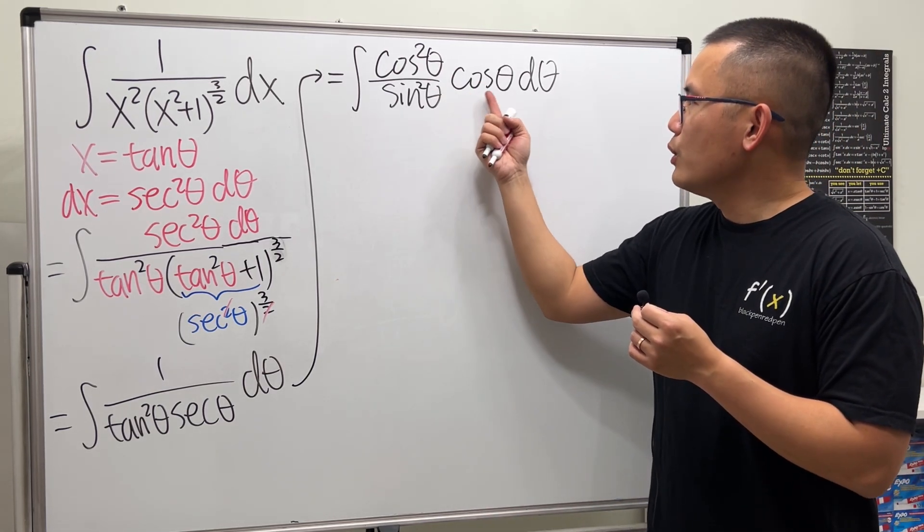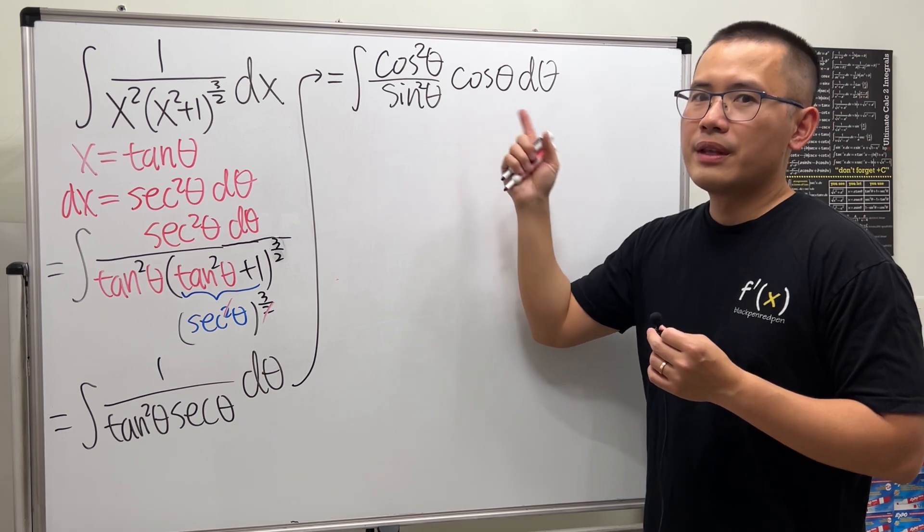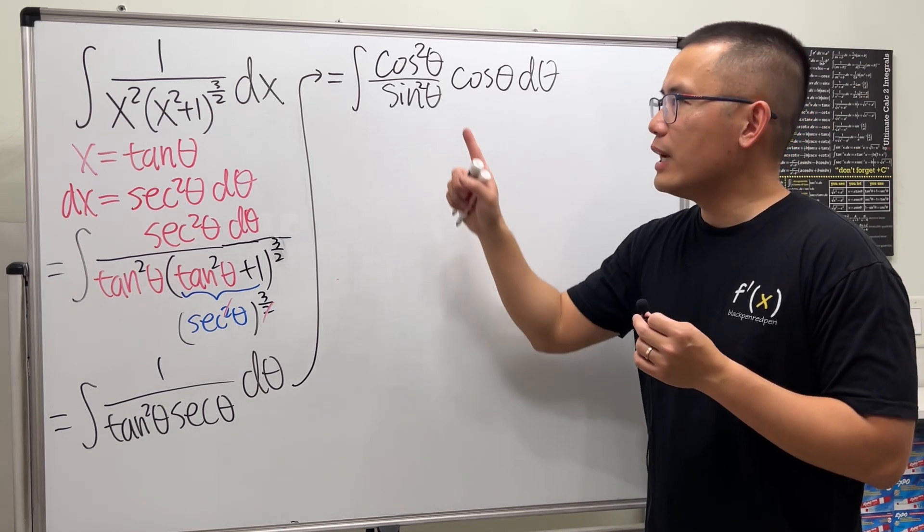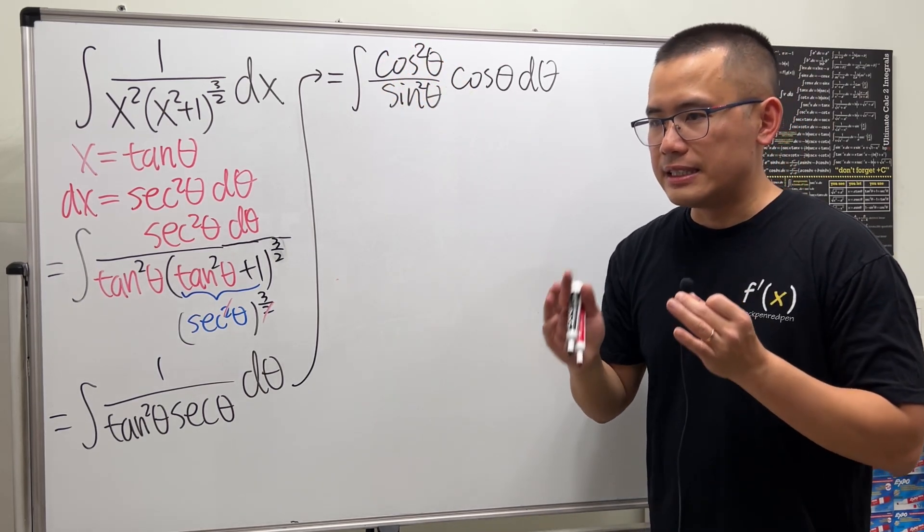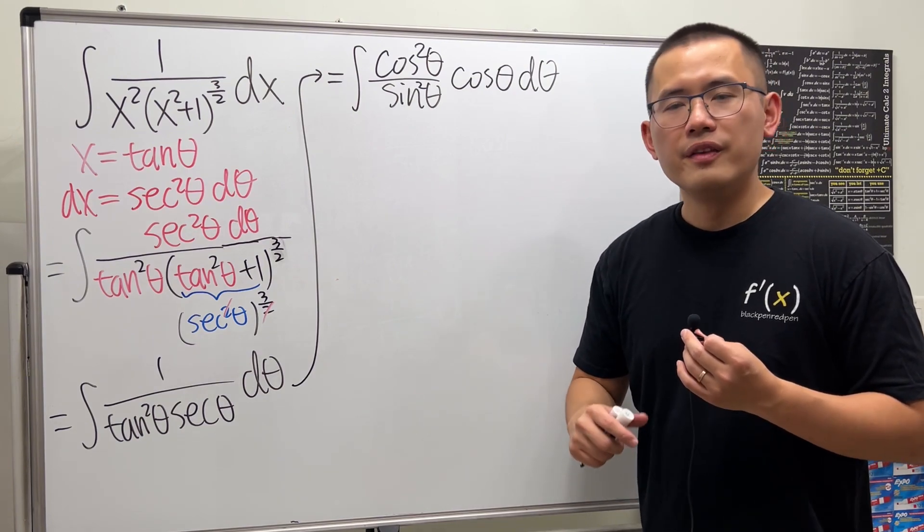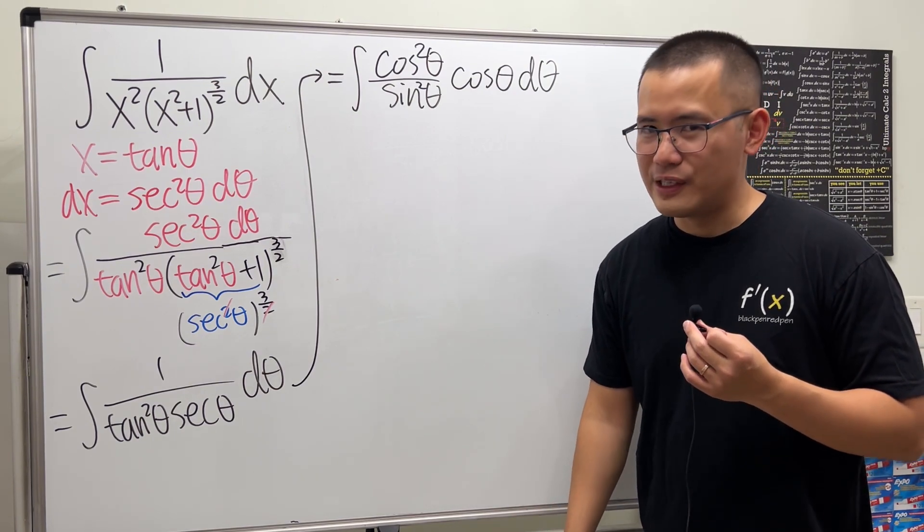We have the integral 1 over tangent squared, which is the same as cotangent squared, which is cosine squared theta over sine squared theta. Then 1 over secant theta is just cosine theta. We already have a cosine theta d theta here, so if we can write the first part as an expression in terms of sine theta only, then we can do a regular u-substitution.